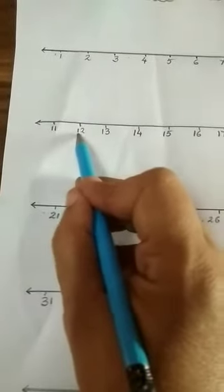Next is 2. So what will come? 1. Next is 1, 3, 13. Look at here. 1, 3, 13. What will come before 13? 1, 2, 12.